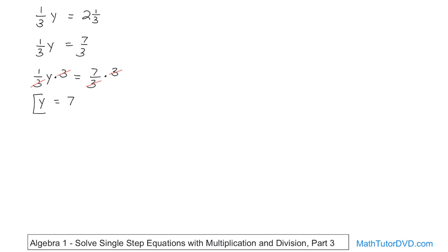So you found the answer, y is equal to seven. So if you were to take seven and put it in here, what is one-third times seven? It's going to be seven-thirds, which is what this number is.